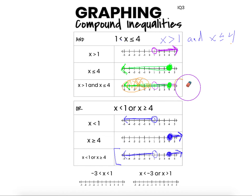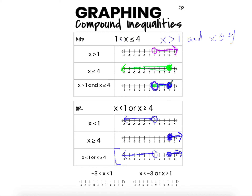Some students graph both simple inequalities onto one number line and then erase the non-overlapping region, but most students just directly graph the compound inequality from the initial statement. For x is greater than 1 and x is less than or equal to 4: open dot at 1 because 1 is not part of the solution set, closed dot at 4 because that is the largest possible value, and the graph is the area in between those two numbers — not including 1, but including 4. This is the overlapping region of the two simple inequalities.